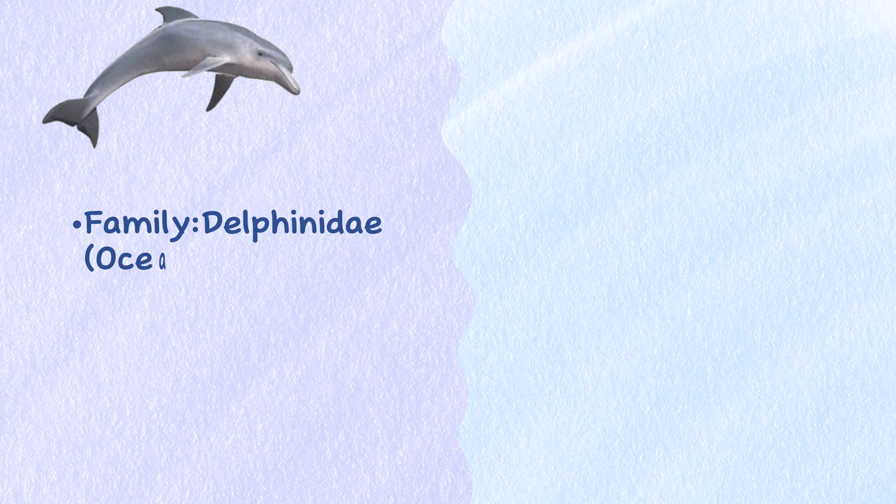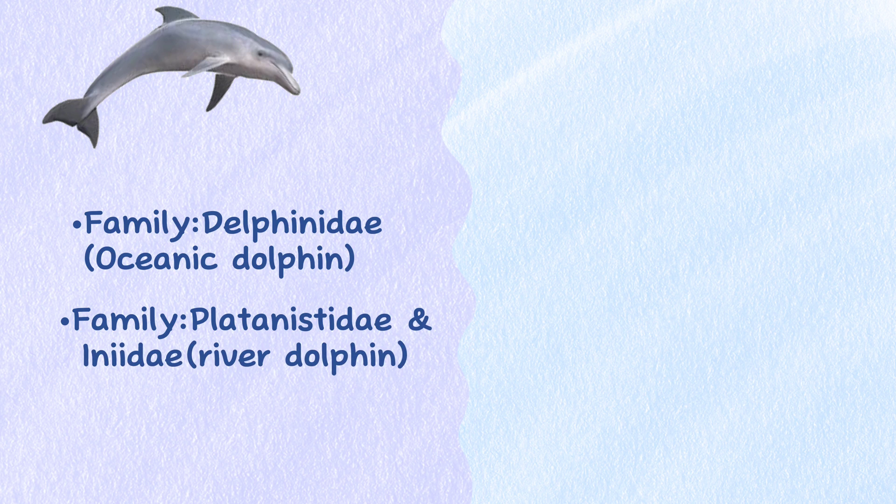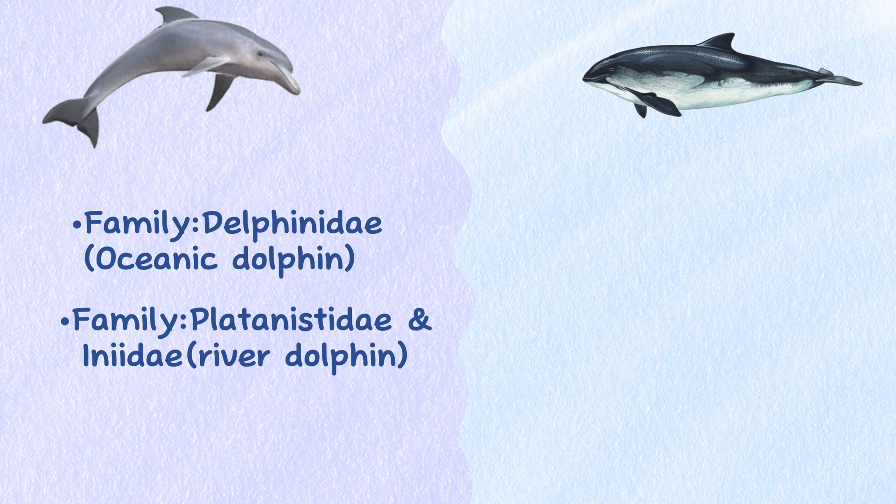Taxonomy. Oceanic dolphins are the members of mammal family Delfinidae, and river dolphins are the members of the mammal families Platonistidae and Inidae. Porpoises are small cetaceans classified under the family Phocenidae.